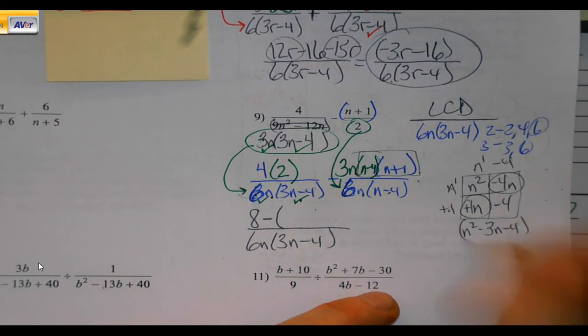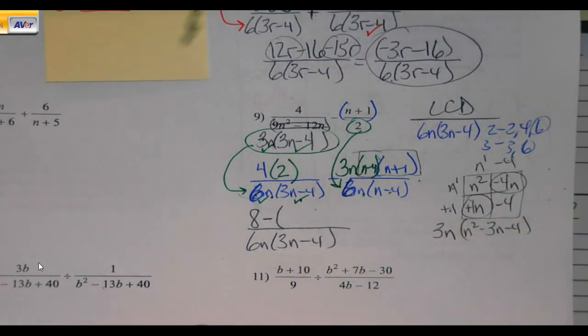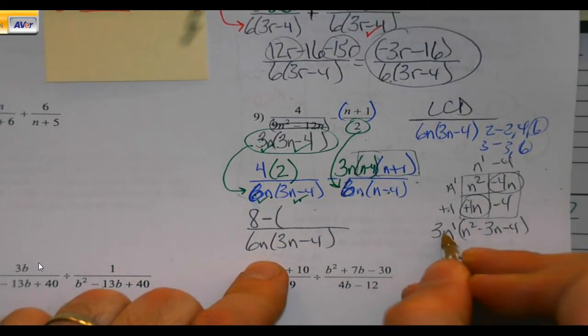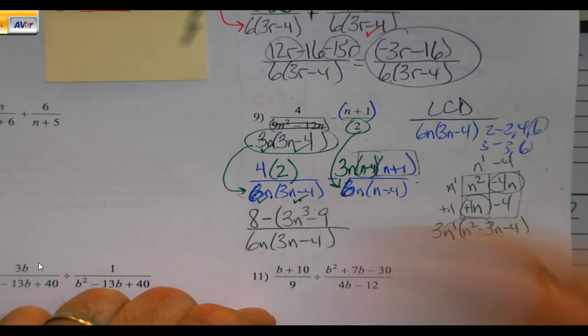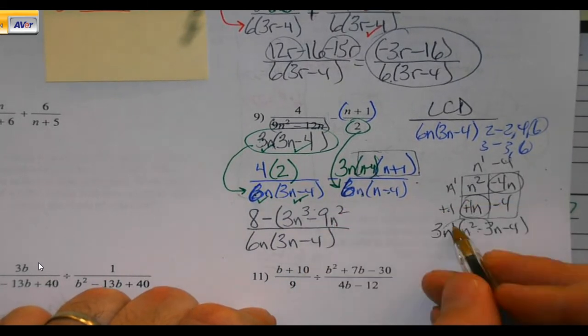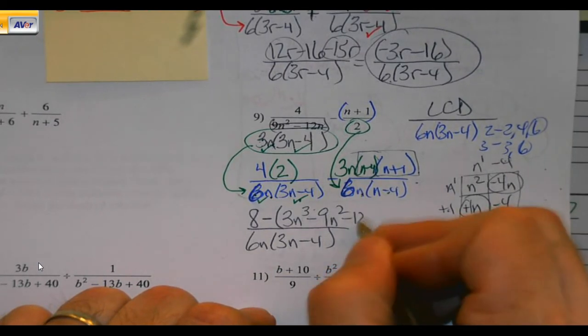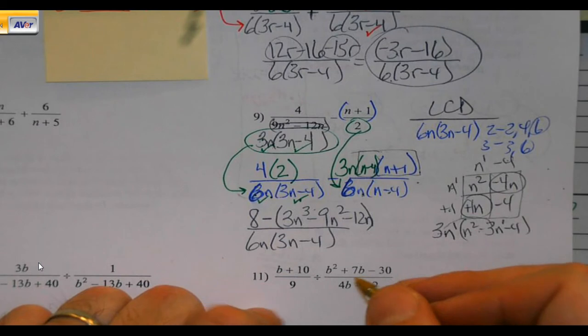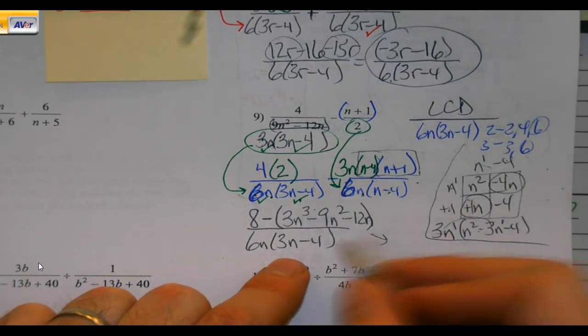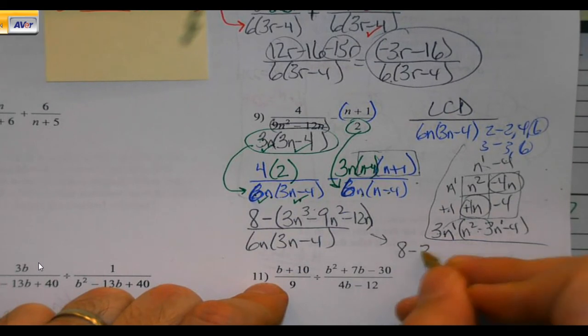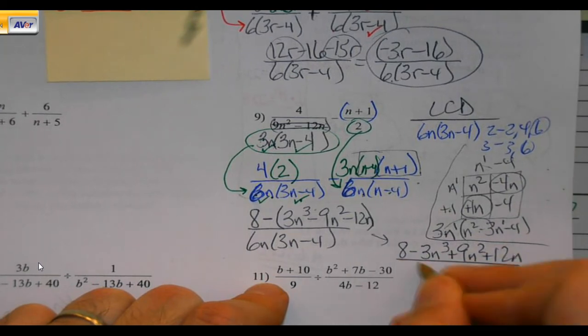n minus 4, n plus 1. I'm going to multiply my edges together. Hopefully this is not the first look that you have had at any of this. I did the box on these two. I still got to multiply them by the 3n though. And I'm going to distribute that. 3n times n squared would be 3n cubed. 3 times negative 3 is negative 9n squared. And 3 times negative 4 is negative 12n.